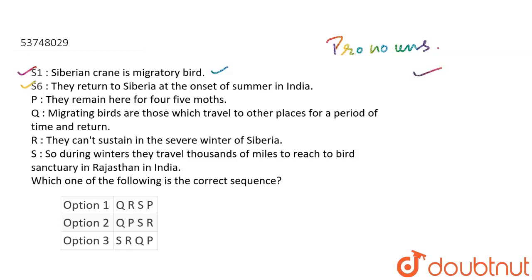You have to have a story line. How are the incidences of each one? The first sentence we have been given is: 'Siberian Crane is a migratory bird.' Our last sentence is: 'They return to Siberia at the onset of summer in India.'